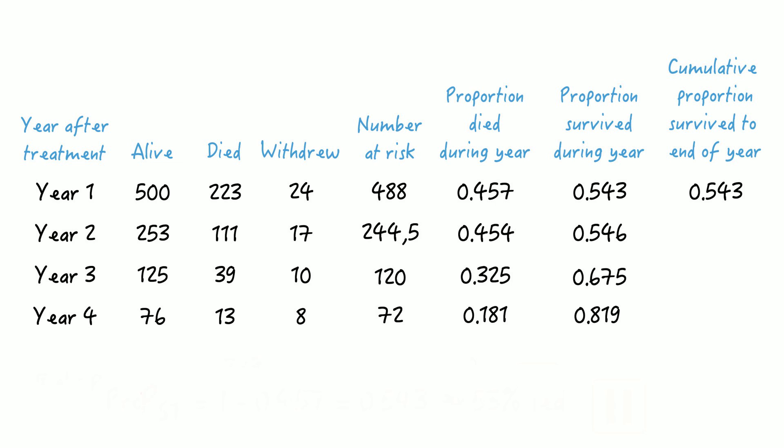Surviving from the start of the study until the end of year 2 is 0.543 times 0.546, and that's 0.297. So around 30% of the study's participants survived the first two years. Now again, please stop the video and calculate the cumulative proportions for each year yourself, then come back. So these are the numbers. You see that 5-year survival in this study population is 16.4%. These cumulative percentages could be nicely depicted in a survival curve if need be.